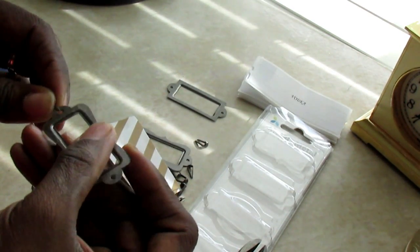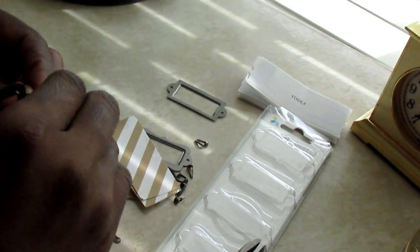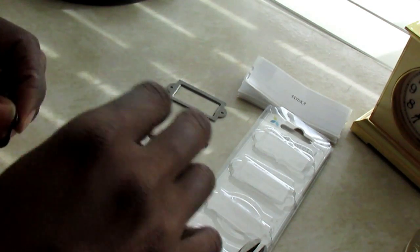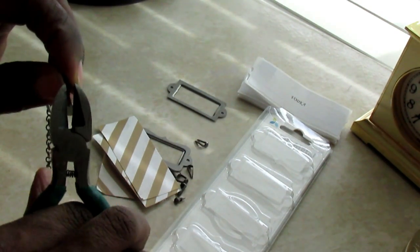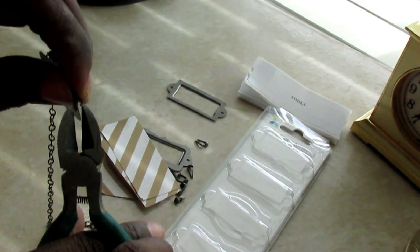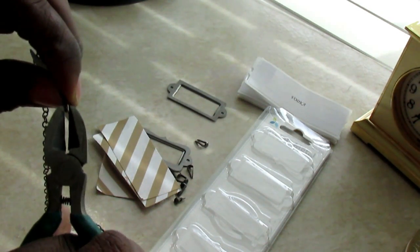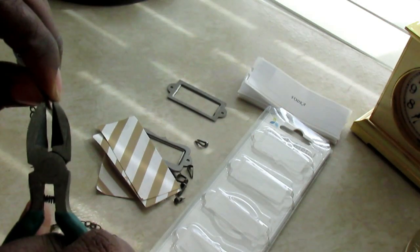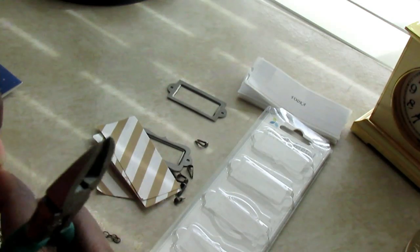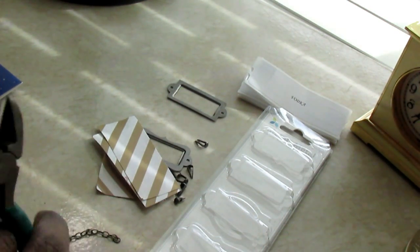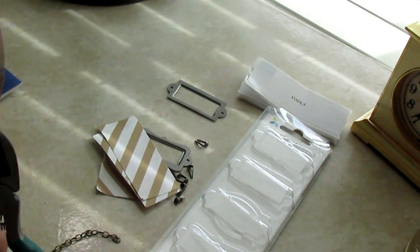You open one end of the link and enter it into the left hole of the metal tag. And go ahead and close it using the wire cutters. This is just to secure the link to the hole, and then you do the same thing on the other side.